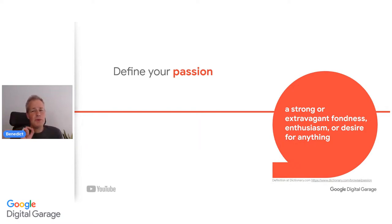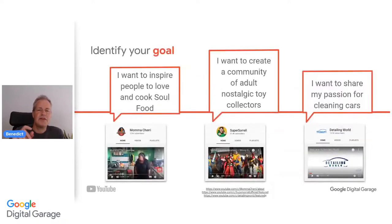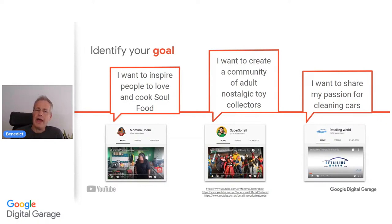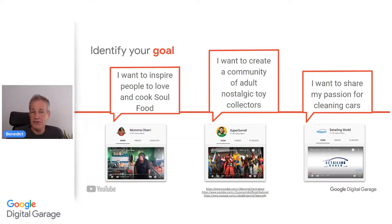Once you know what you want to talk about, we need to think about why. Identify your goal — for example, 'I want to inspire people to love and cook soul food.' Why did you join YouTube and what do you hope to accomplish with your content? Ask yourself what you are aiming for. Whether you want to build awareness of your passion, influence and inspire your viewers, entertain people, or simply have people love what you're doing — creating content gives you a chance to positively influence your audience and build trust, which ultimately grows loyalty. Before you start creating content, you need to be clear on your goal. If you are clear on your goal first, it makes it a lot easier to create the steps to get there.